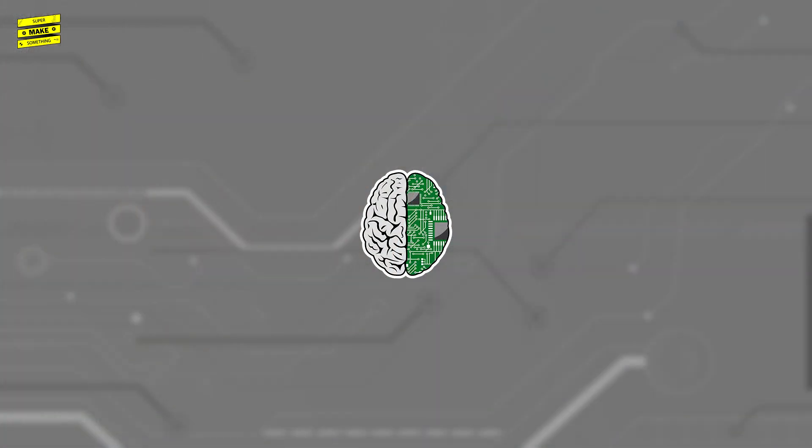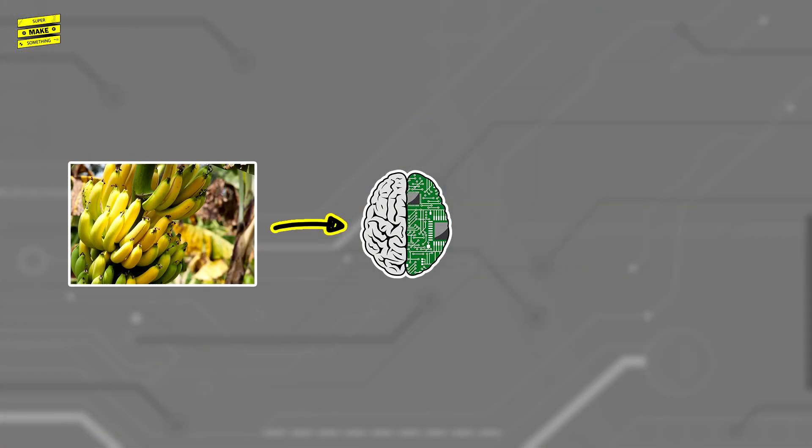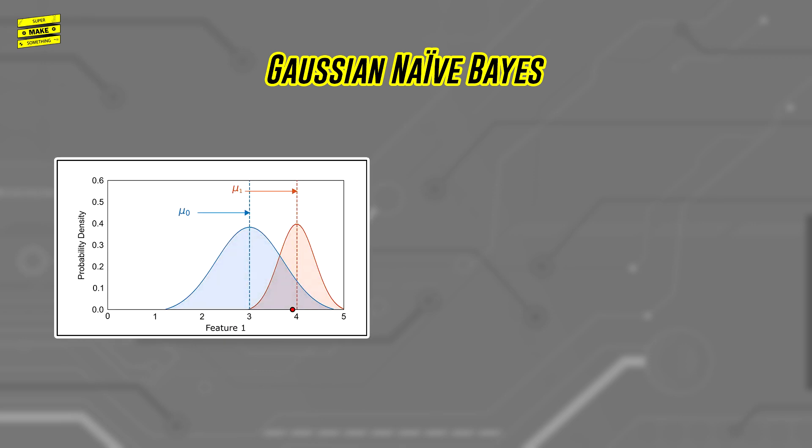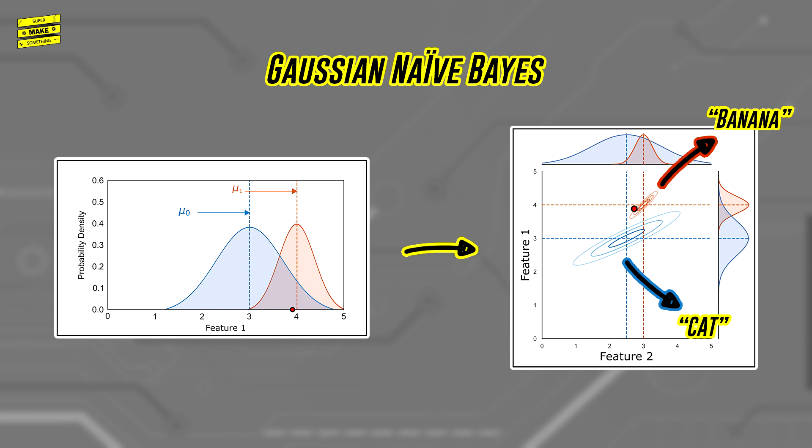But how exactly does a computer go from raw pixel values to determining whether an object in an image is a dog, a cat, or a banana? One way to do it is to use an algorithm called Gaussian Naive Bayes, a classifier that uses probability to determine the most likely object in an image based on a set of pre-computed features.